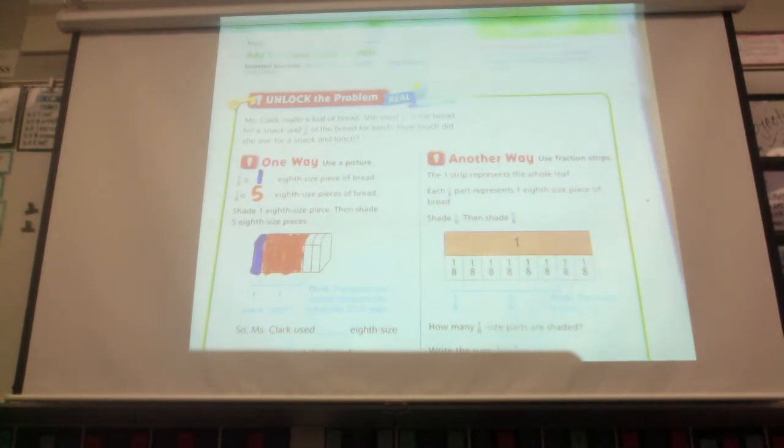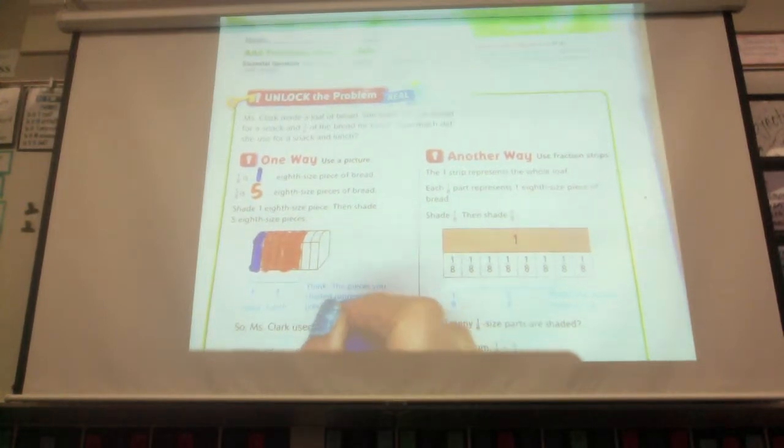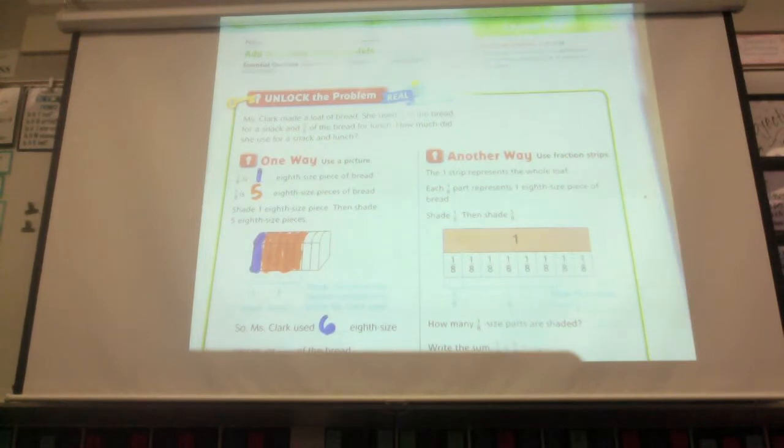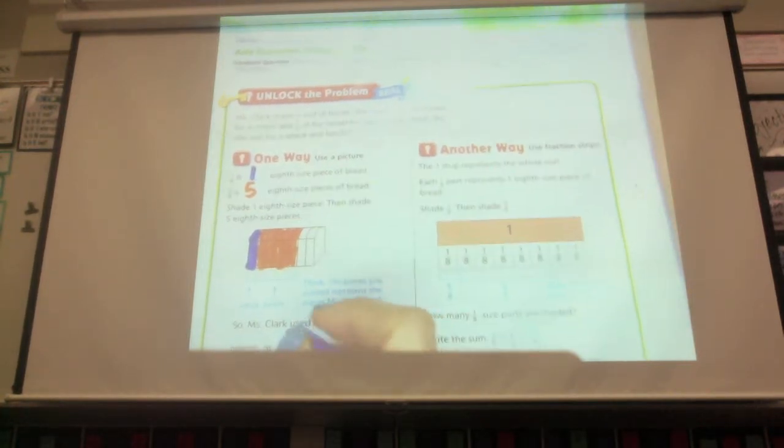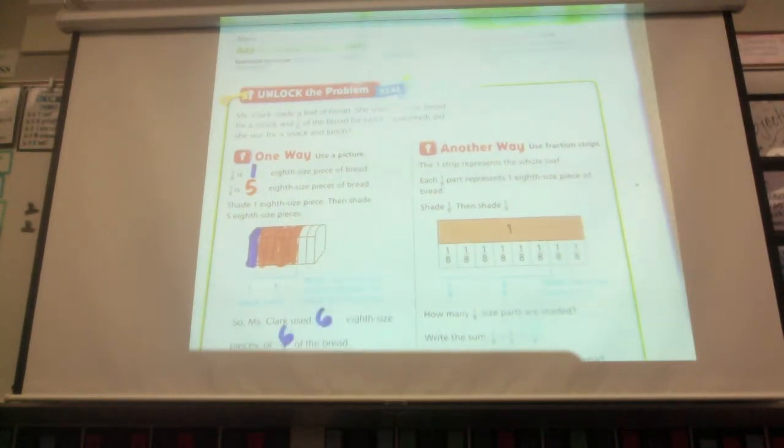Now remember when you're doing a model, the pieces that you shade are representing, in this case, they're representing the pieces of bread that she used. So how many eighth-size pieces did she use? I want your eyes up here. How many is that? Six. Very good. So when we write the fraction, we're going to say she says eight-size pieces or six-eighths of the bread.